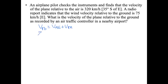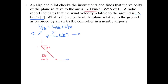The velocity of the air to the earth is 75 km/h east. The velocity of the plane relative to the air is 320 km/h at 35 degrees south of east. Drawing these vectors tip to tail, we break the plane-to-air vector into its components. We'll call the plane-to-air vector one and the wind vector two.